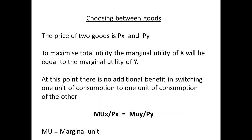Assume that there are two goods that the consumer can choose from. How do we determine when a consumer gets the maximum benefit from consuming both goods? The consumer will get the maximum benefit when the marginal utility of good x is equal to the marginal utility of good y. At this point there would be no extra benefit from switching one unit of consumption of x to one unit of consumption of y, or vice versa.